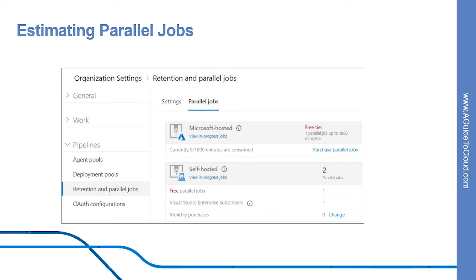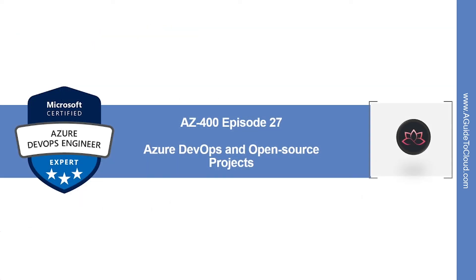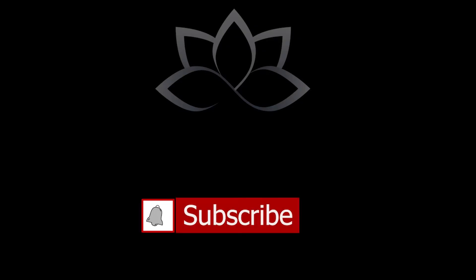A simple rule of thumb is to estimate that you will need one parallel job for every four or five users in your organization. You can view parallel jobs by browsing to your organization settings, then Pipelines, Retention and Parallel Jobs. This is where you can view the minimum number of parallel jobs available in your organization. That concludes this lesson. In the next episode we're going to learn about Azure DevOps and open source projects. Take care.